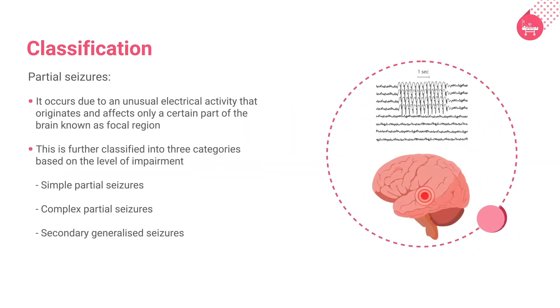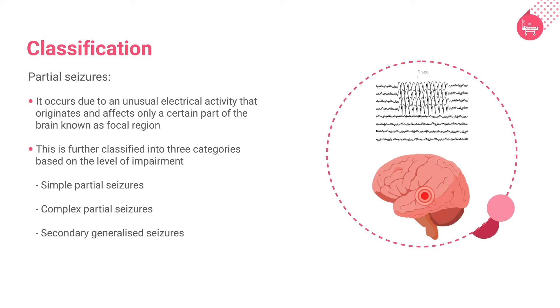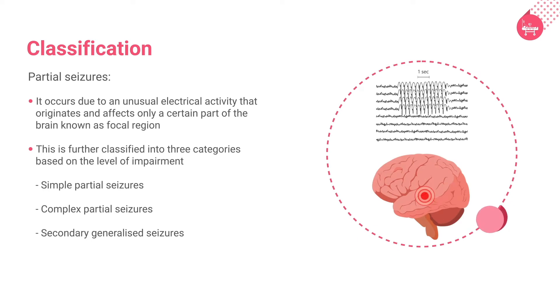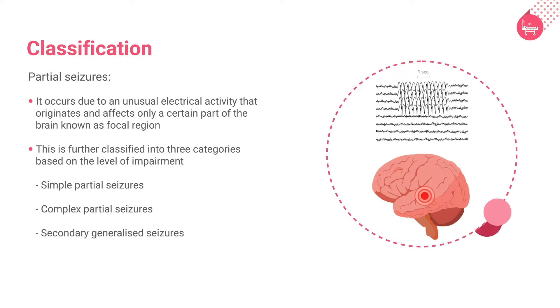Partial seizures occur due to unusual electrical activity that originates and affects only a certain part of the brain, known as the focal region. This is further classified into three categories based on the level of impairment.